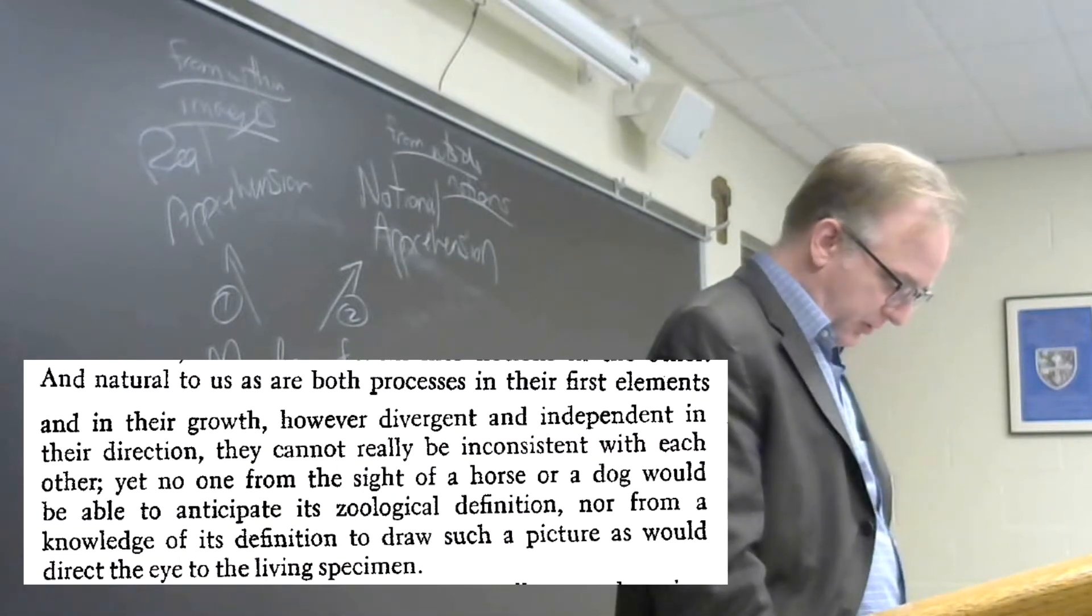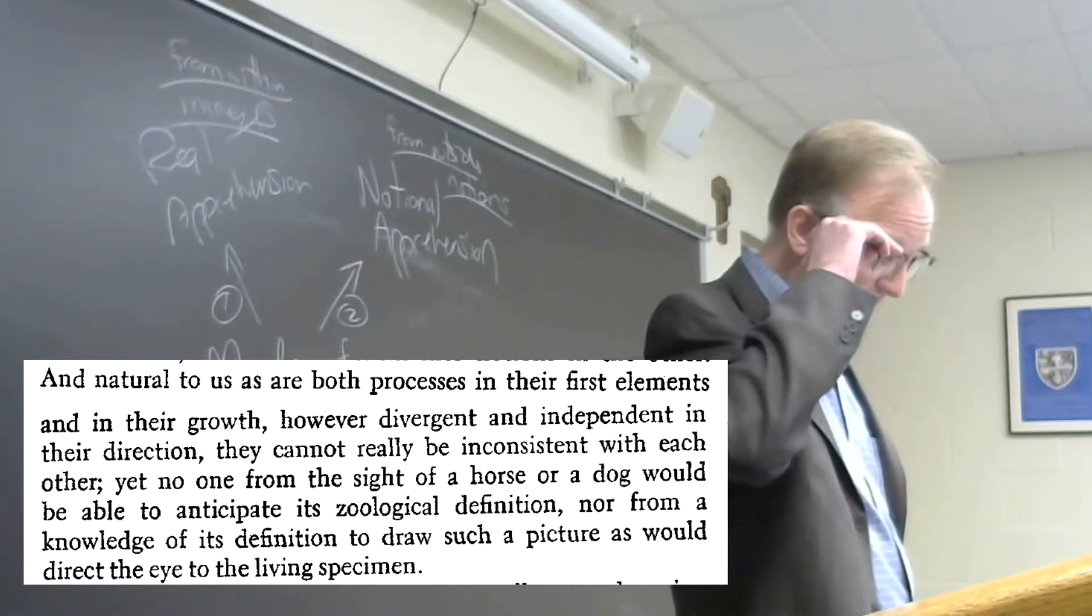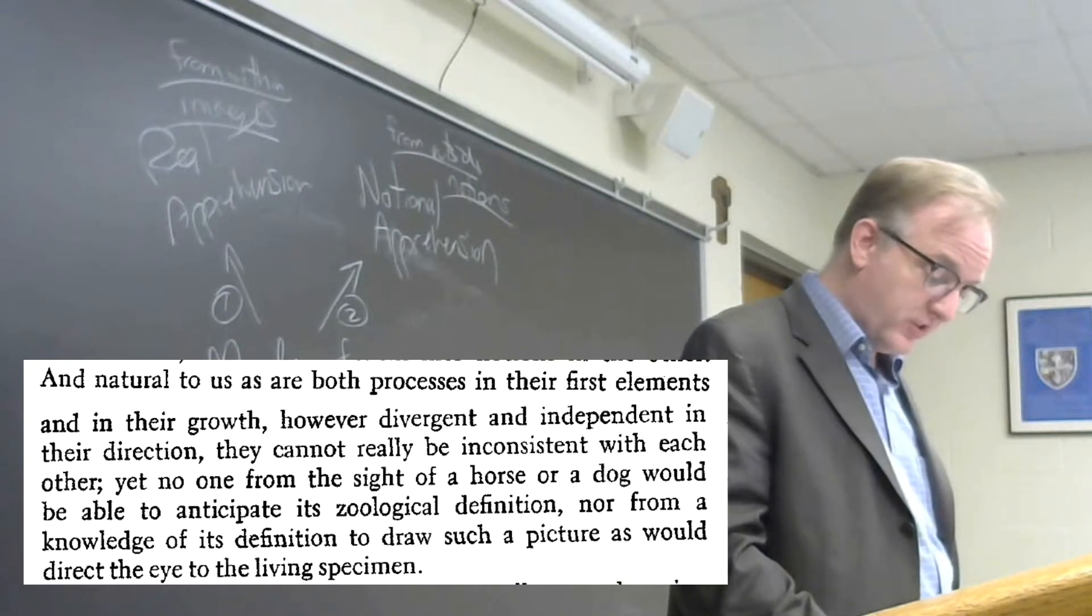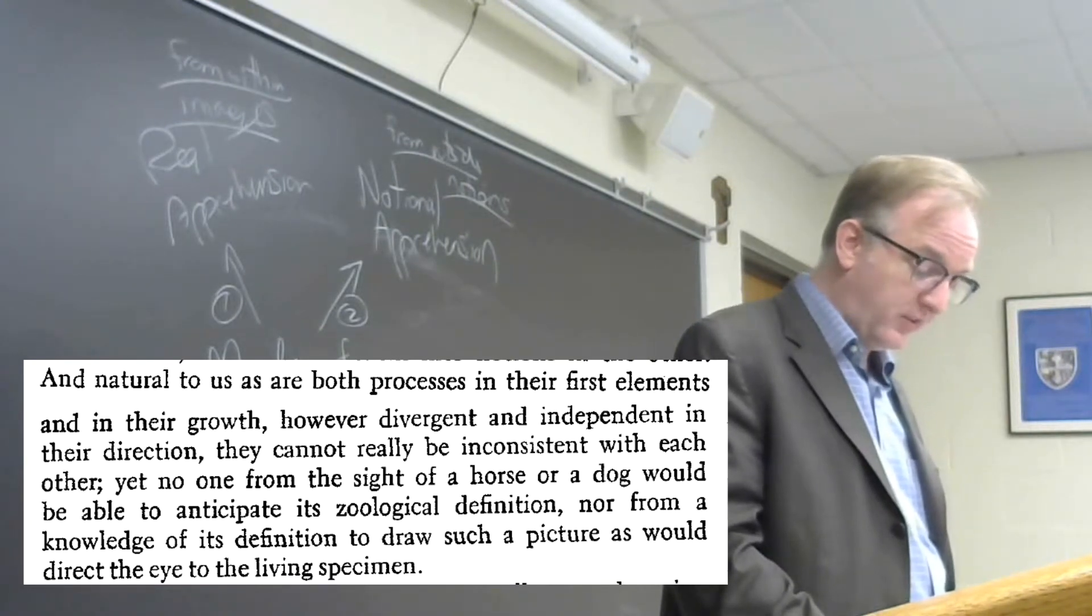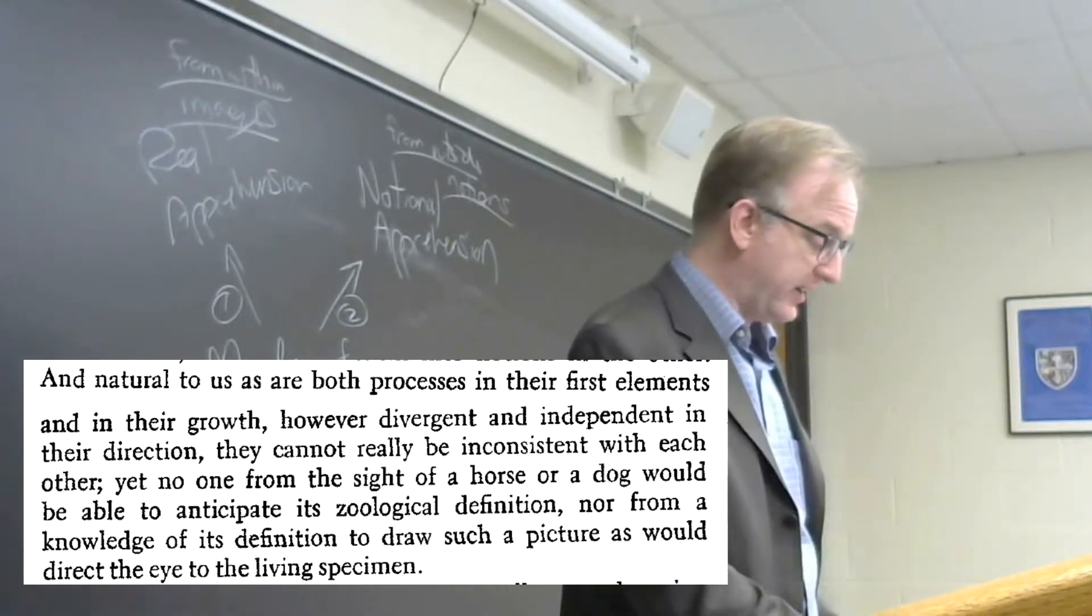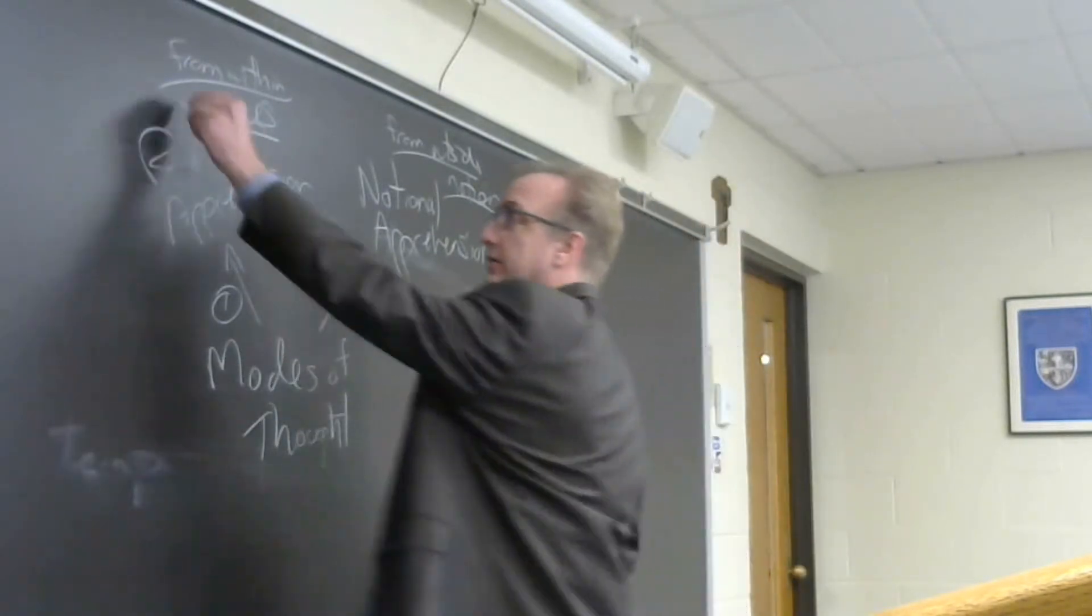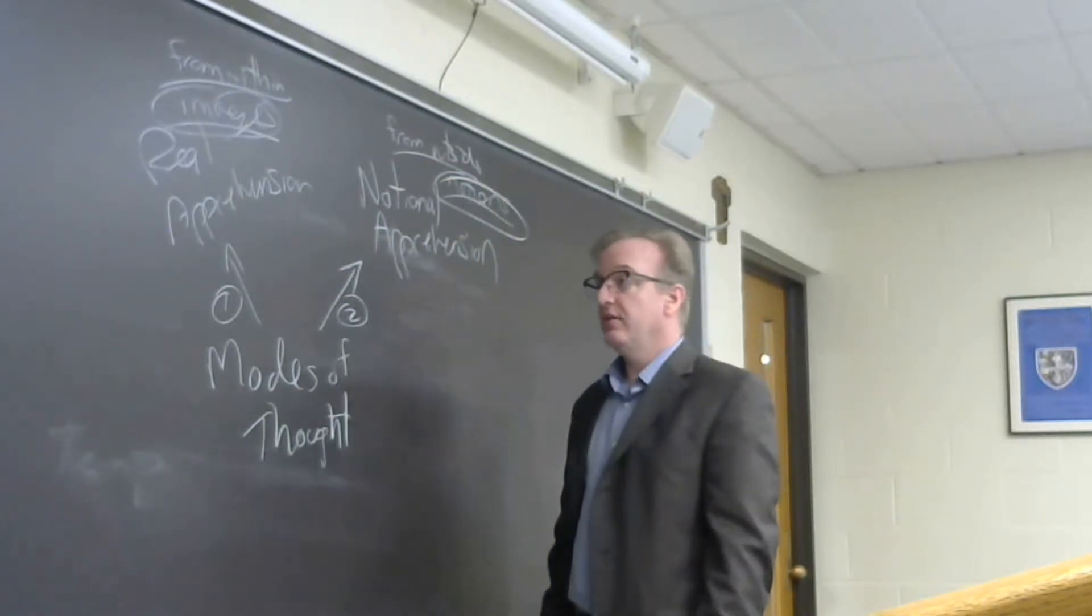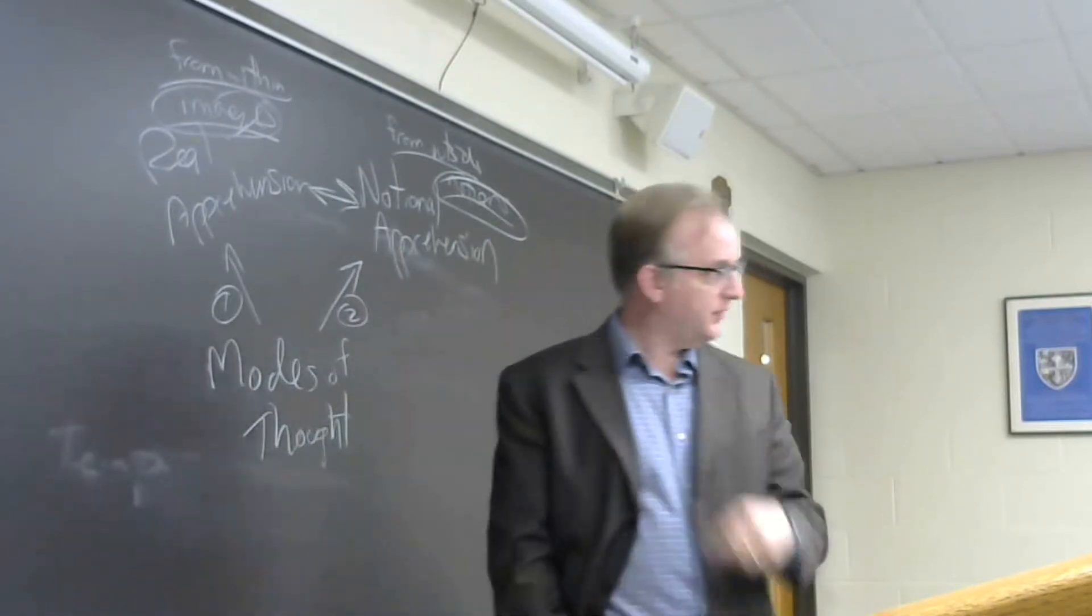Natural to us are both processes in their first elements and in their growth, however divergent and independent they are in their direction. They cannot really be inconsistent with each other, yet no one from the sight of a horse or dog would be able to anticipate its zoological definition, nor from a knowledge of its definition draw such a picture as would direct the eye to the living specimen. So we get again the idea here of the image and the concept, the definition. These will be compatible, but of different orders.